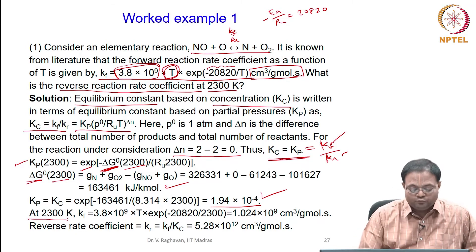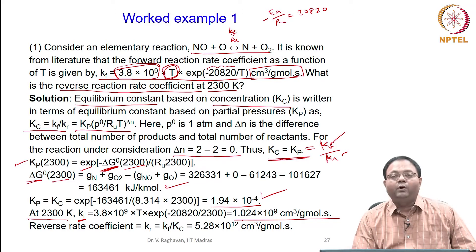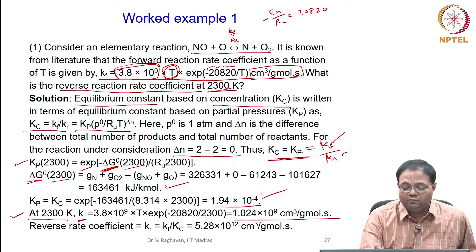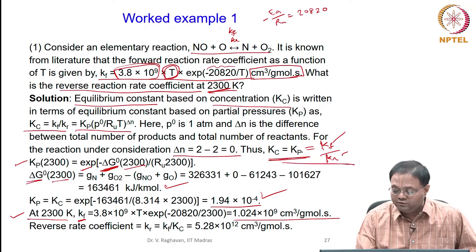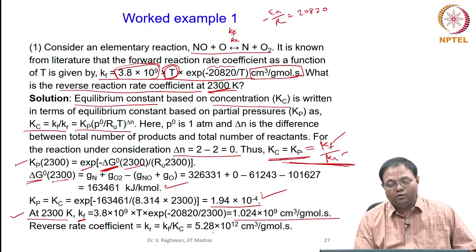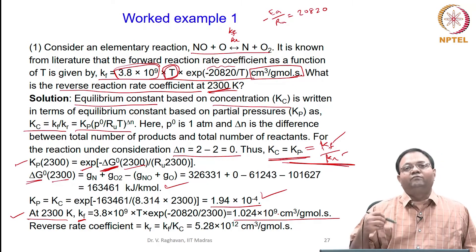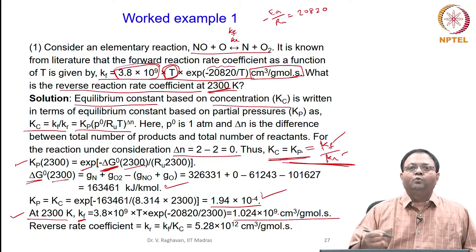At 2300 K, KF is determined by substituting T equals 2300 into the expression, giving KF equals 1.024 × 10⁹ cm³/(g-mol·s). The reverse rate coefficient Kr equals Kf divided by Kc, which gives 5.28 × 10¹² cm³/(g-mol·s). So once the forward rate is known, using Kc definition (Kf/Kr) allows calculation of the other rate coefficient, improving accuracy.